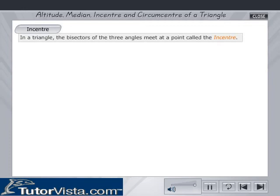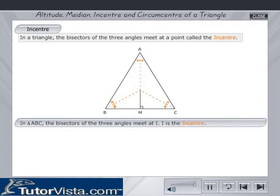In a triangle, the bisectors of the three angles meet at a point called the in-centre. In triangle ABC, the bisectors of the three angles meet at I. Hence, I is the in-centre.